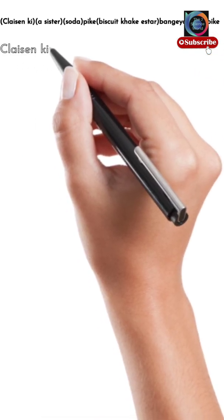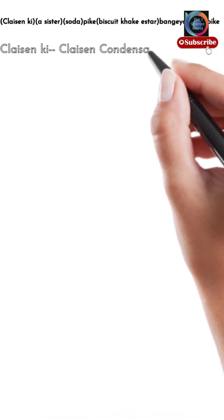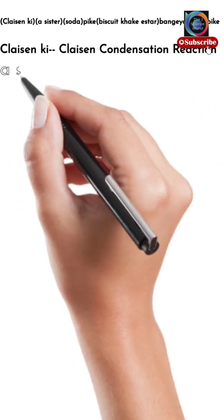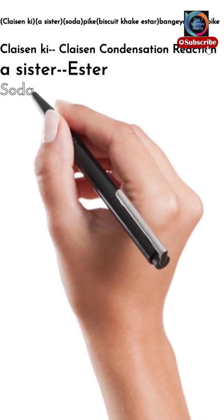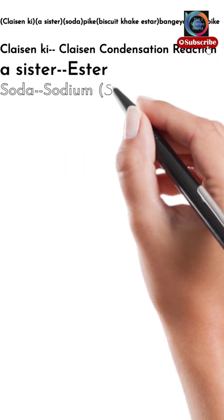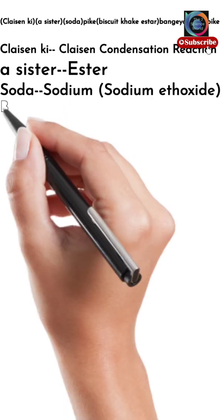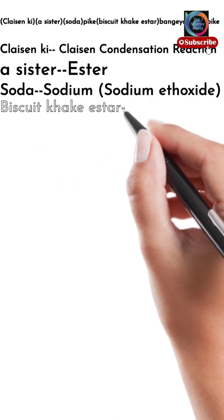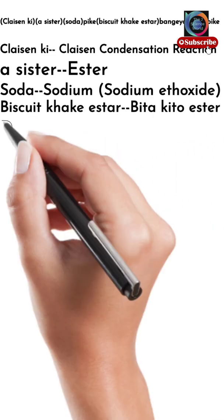Every part of this verse consists of a special name. Let's discuss it. 'Claisen ki' stands for Claisen Condensation Reactions. 'Sister' stands for ester. 'Soda' stands for sodium — we also use sodium ethoxide. 'Biscuit khake, Star' stands for beta-keto esters.